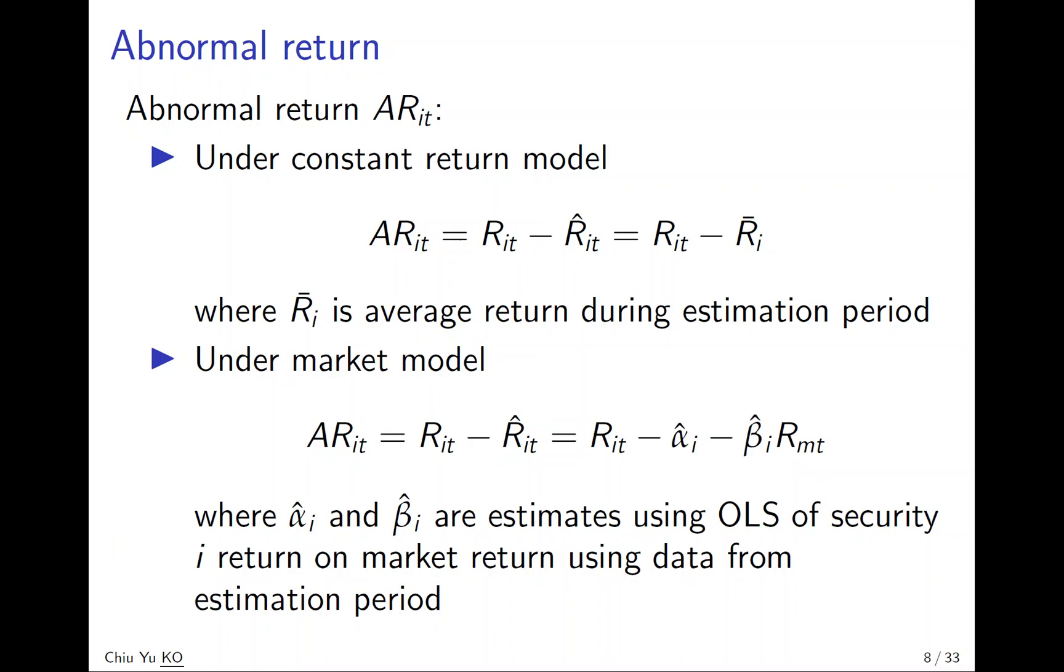Under the market model, we estimate alpha_i and beta_i using regression during the estimation window, and then use these parameters with the market return to calculate the normal return.